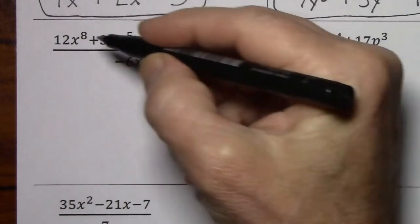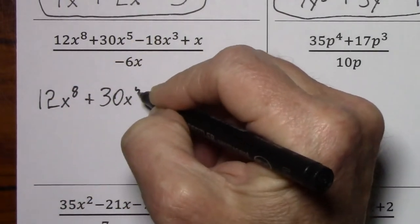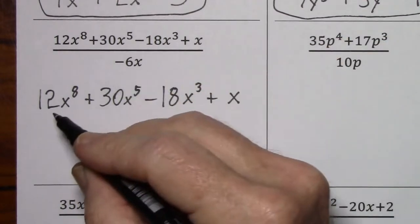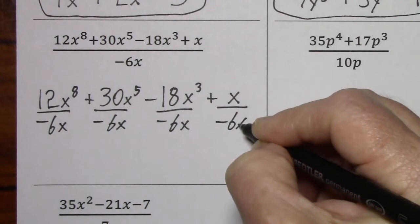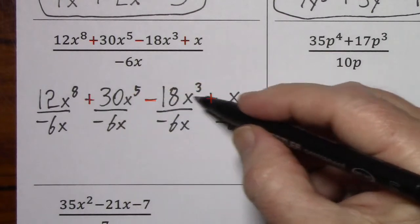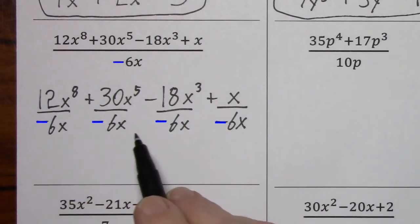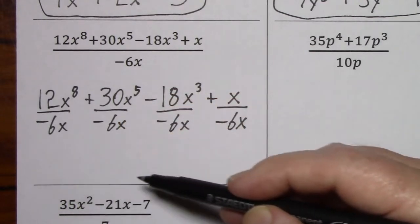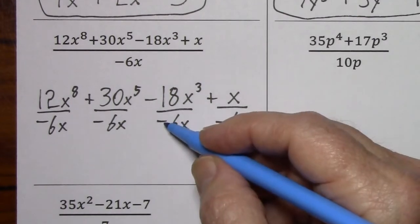Looking at this example, I'll rewrite the numerator and then put negative 6x in each denominator. This helps you see why it's good to have these signs up with the numerator, because this negative sits in each fraction in the denominator. Then we'll simply say positive divided by negative gives us a negative. Over here we'll have negative divided by negative, so this will become positive.